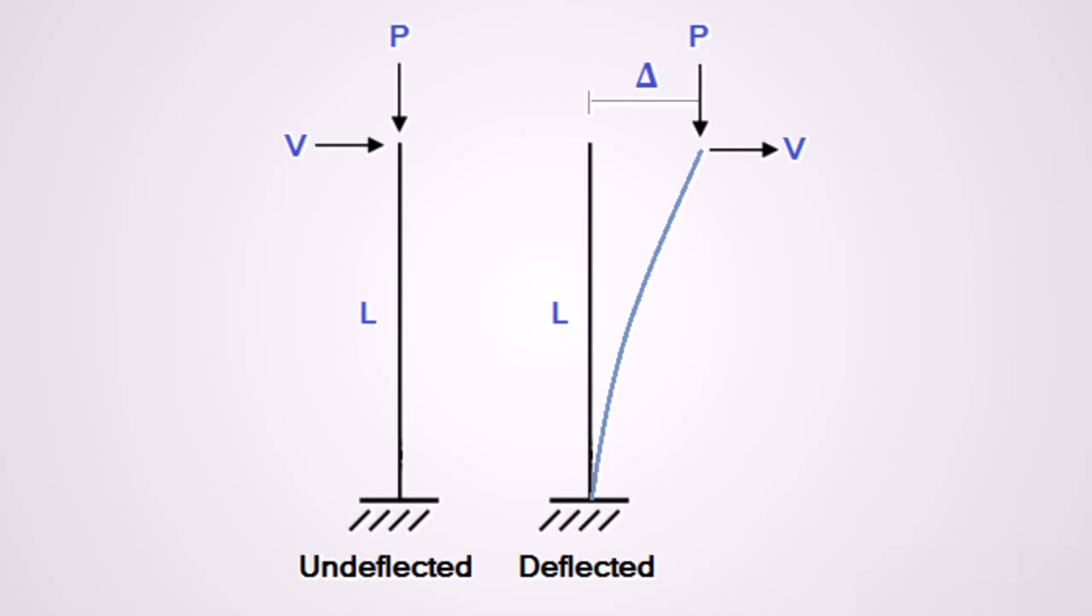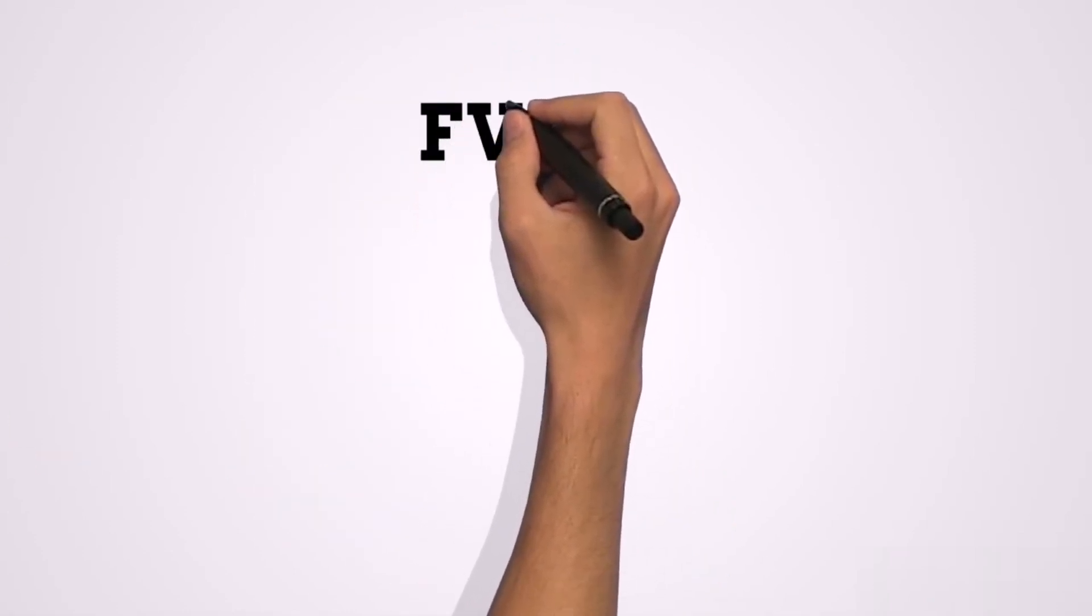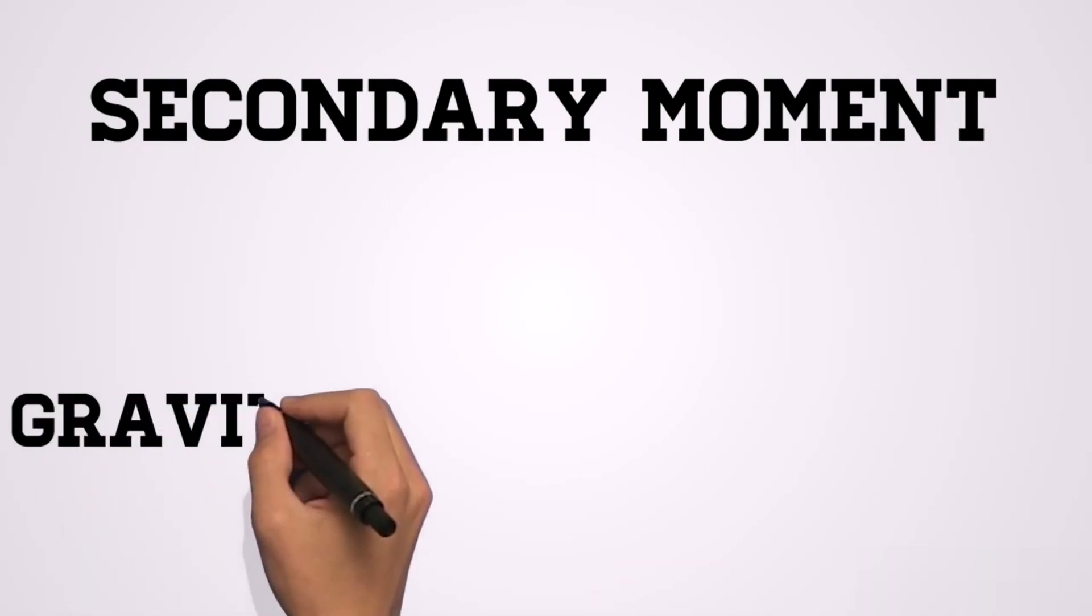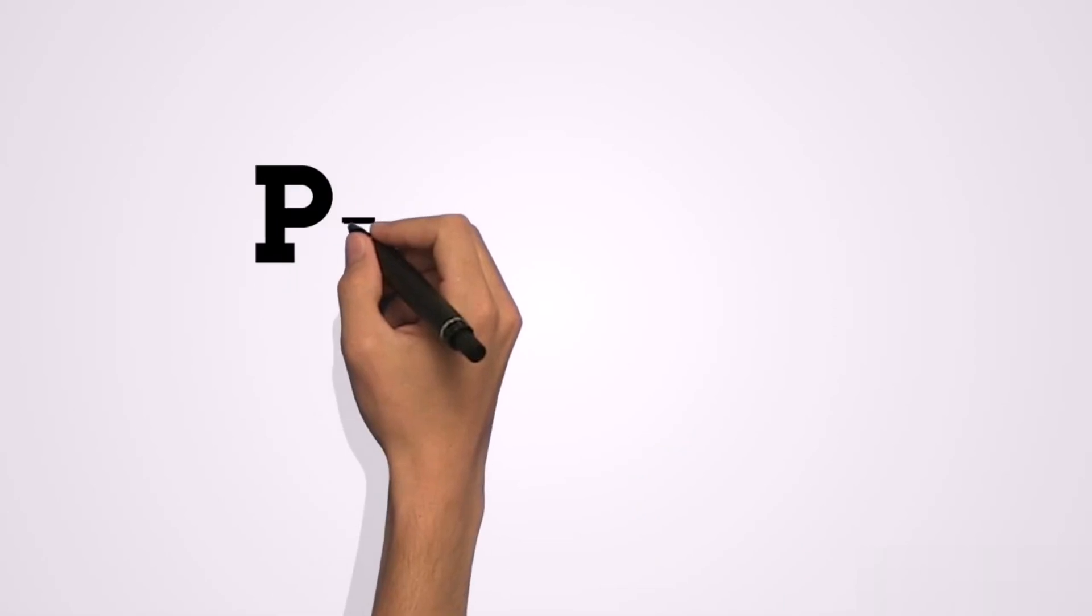Now, if we take the sum of the moment about the base of a structure, we have the vertical load multiplied by the height of the structure, which would be the primary moment. We are going to add this primary moment to the secondary moment, which is caused by the gravity load multiplied by the deflection. So this is the secondary moment, and the secondary moment is what we call P-delta effects.